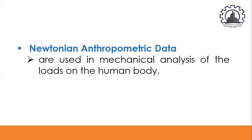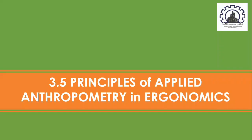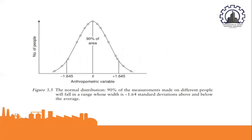The next key area is the principles of applied anthropometry in ergonomics. Anthropometric variables in a healthy population usually follow a normal distribution. 90% of measurements made on different people will fall in a range whose width is ±1.64 standard deviations above and below the average. For design purposes, there are two key parameters of normal distribution: the mean and the standard deviation.